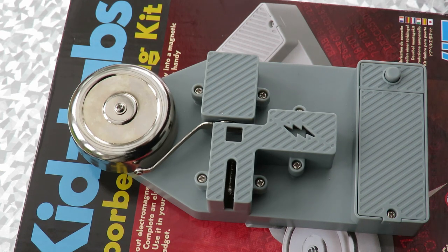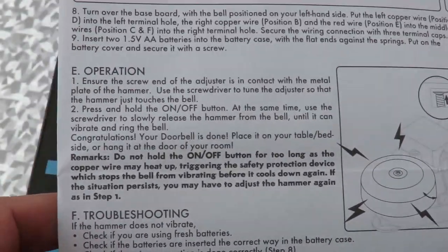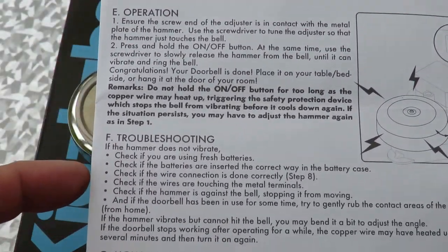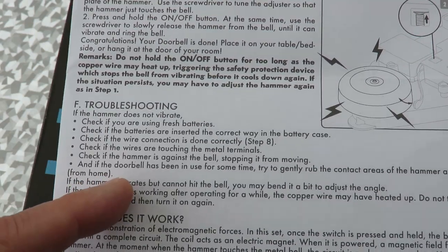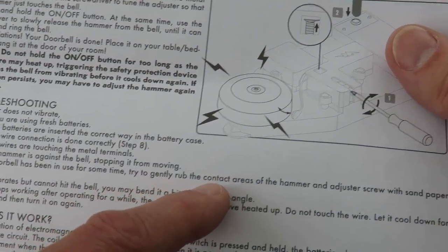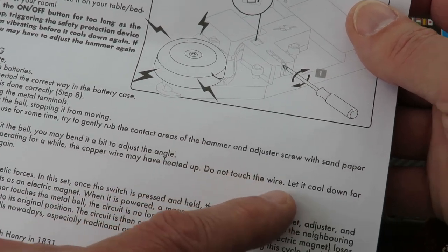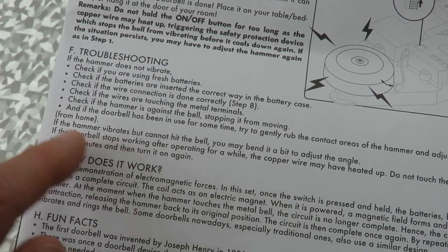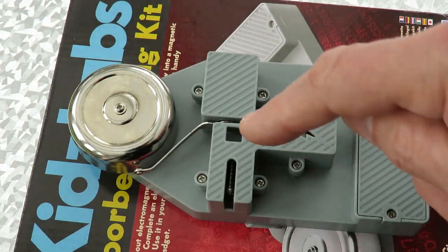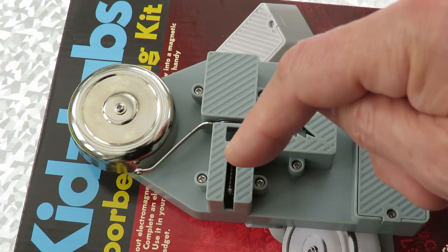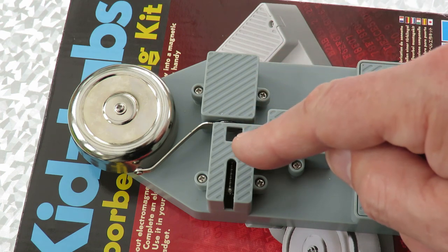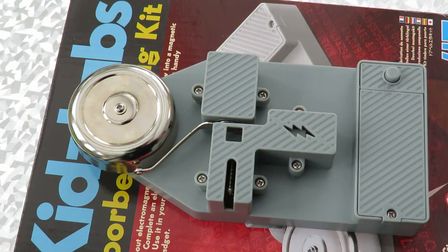It does say in the instructions if it's been in use for some time try gently rubbing the contact areas of the hammer and the adjuster screw with sandpaper. Because what happens is because it's sparking it does build up a carbon deposit so that stops it working as well.